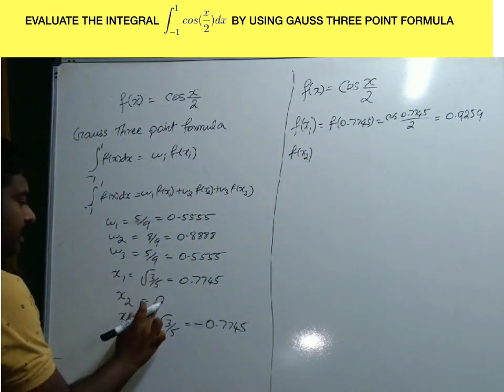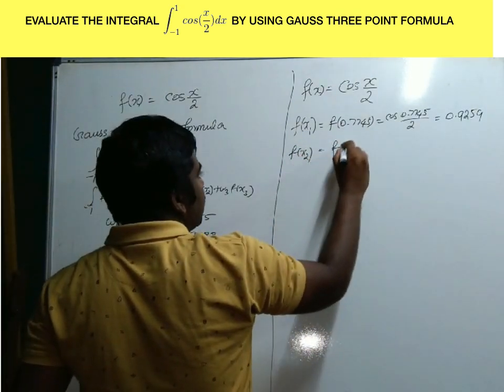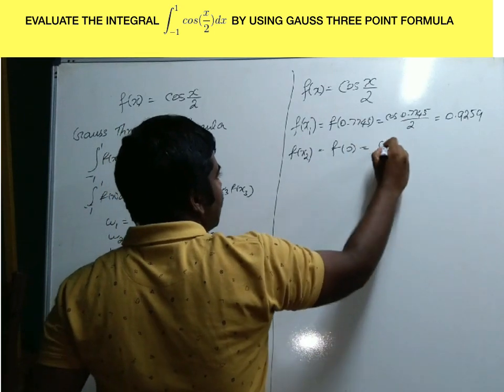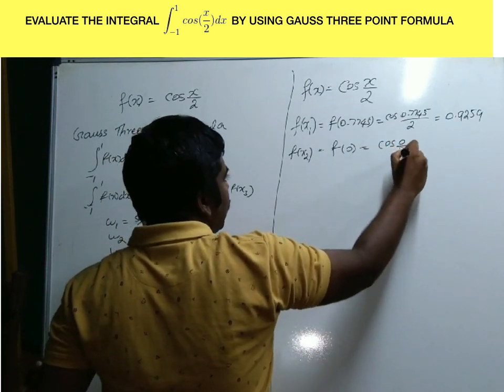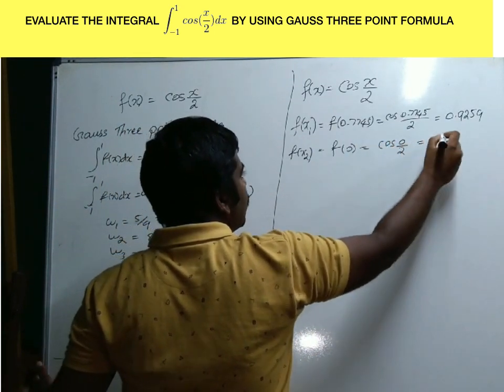Here x2 equals 0. Therefore, f(0) equals cos(0/2), which is cos(0). Cos(0) equals 1.